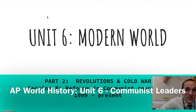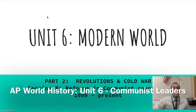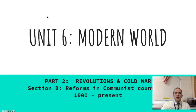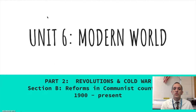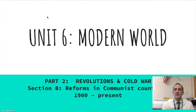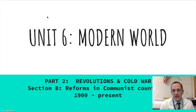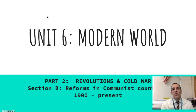Welcome to Unit 6 of the Modern World, Part Two, on the Revolutions in the Cold War. This is Section B, which is on revolutions and reforms in communist countries, coming back to the Chinese and Russian revolutions that happened specifically in 1918 for Russia and around 1946 for China.